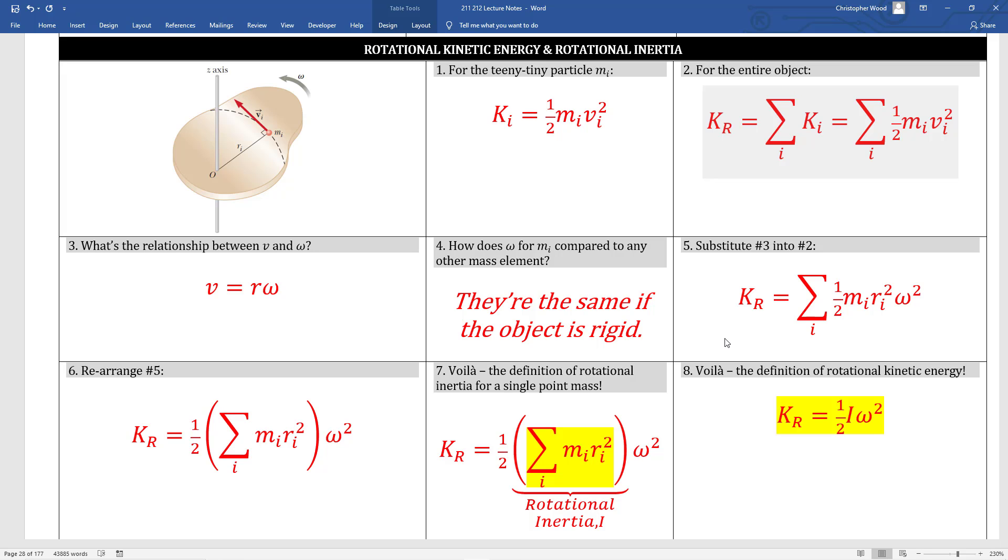Box 7 provides the definition of rotational kinetic energy for a single point. Make sure this really makes sense to you. This is the fundamental building block. All objects can be modeled as one or more points. So if you know how to deal with an individual point, you can use integral calculus to deal with any shaped object.